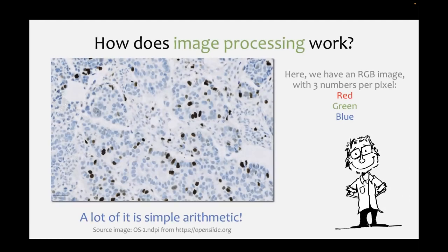Here I've got an example image, one of the Ki-67 images. This is called an RGB image, which basically means that we have three color channels: red, green and blue. For each one of these pixels, you can think of it as having three values - one for the amount of red light, one for green light and one for blue light - which then are mixed together to give you the color that you see on screen. You can think of it effectively as being three values for each of the pixels.